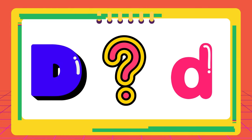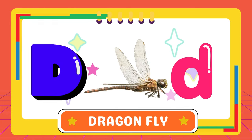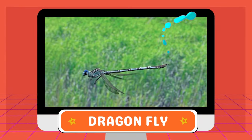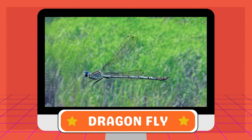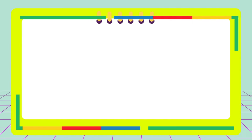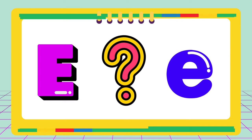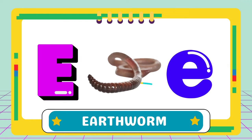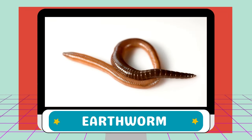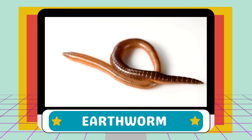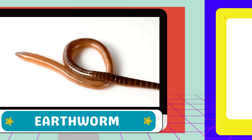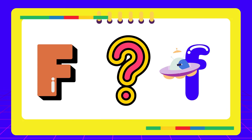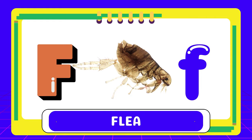D for dragonfly. E for earthworm. F — F for flea.